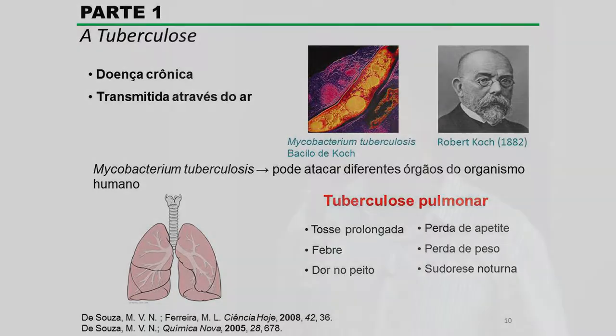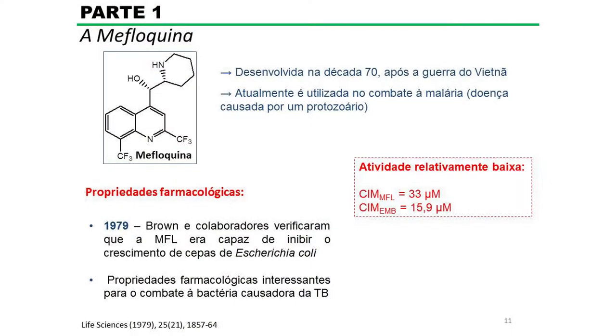Nessa parte, a gente estava interessado especialmente na mefloquina. A mefloquina foi desenvolvida pelas Forças Armadas dos Estados Unidos na década de 70 para tratar a malária, porque durante a Guerra do Vietnã uma série de soldados americanos morriam em função do contágio de malária. Então os Estados Unidos iniciaram um programa para desenvolver novos fármacos, que levou à descoberta desse fármaco, que hoje em dia é usado no tratamento da malária.